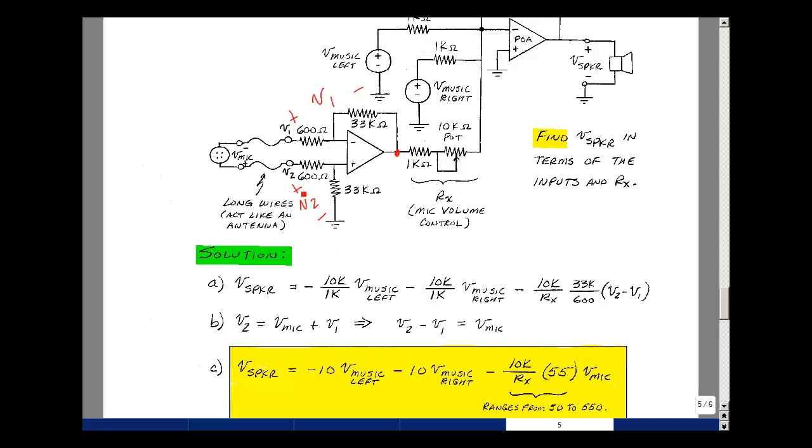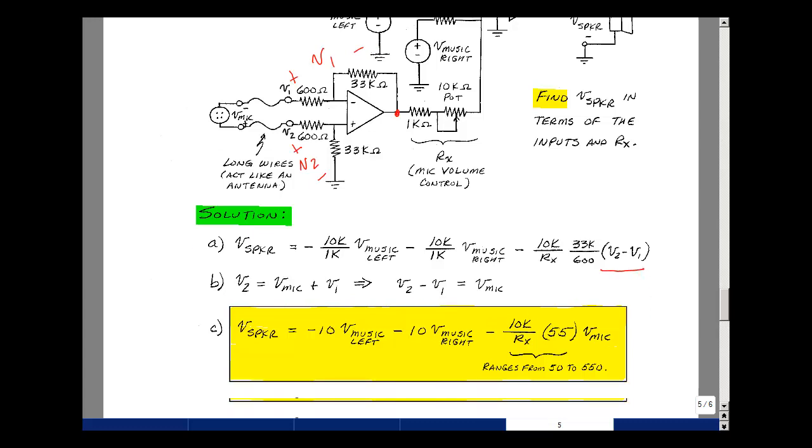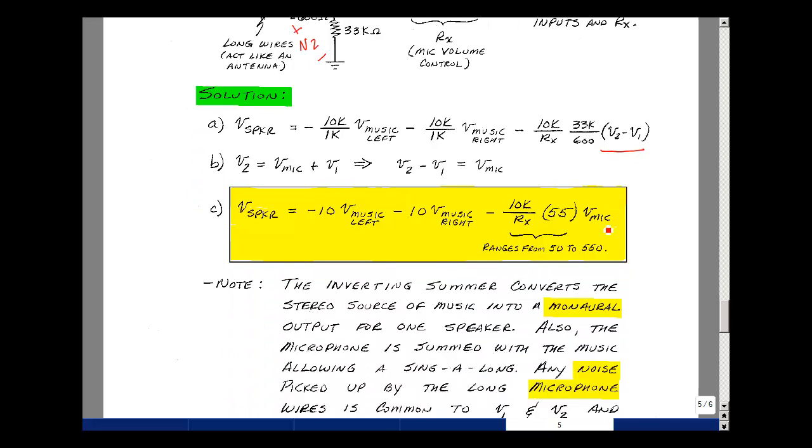So the rise in voltage is V2. The drop is V microphone and then plus V1. We can then solve for the microphone voltage as V2 minus V1. Of course that's that term right here. You can substitute that difference for the microphone voltage.